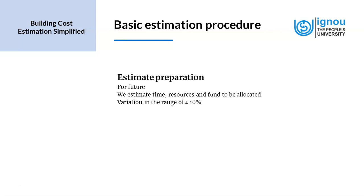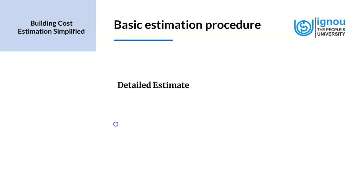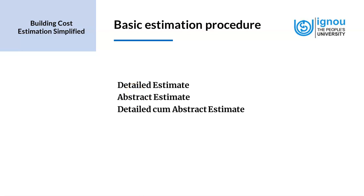We will now look at some of the terminologies that will help us understand the estimation process better. One is the detailed estimate, one is the abstract estimate, and there is also the detailed cum abstract estimate. We will look at these concepts in detail in the next few slides.